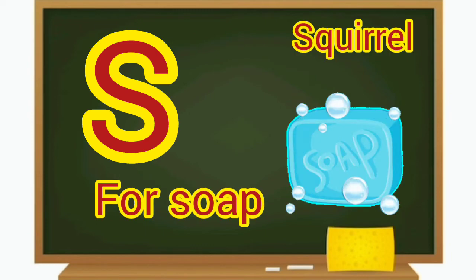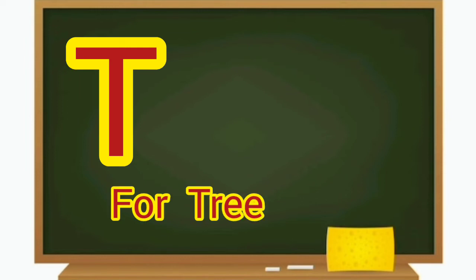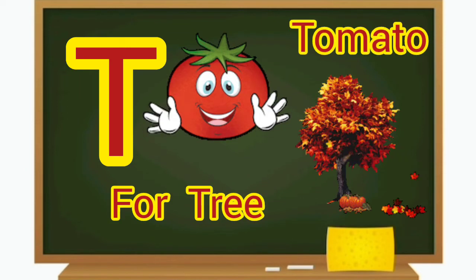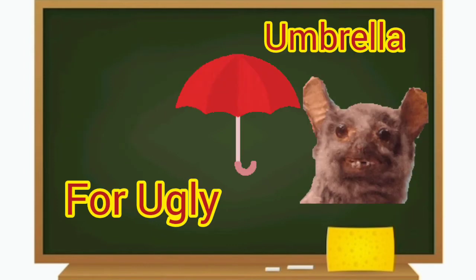S for soap, S for squirrel, T for tree, T for tomato, U for ugly, U for umbrella.